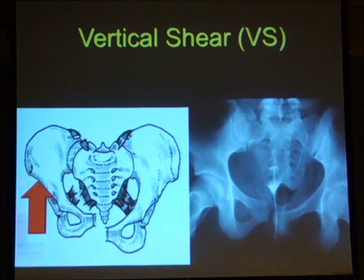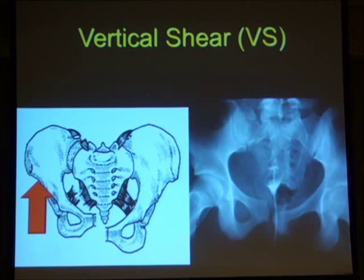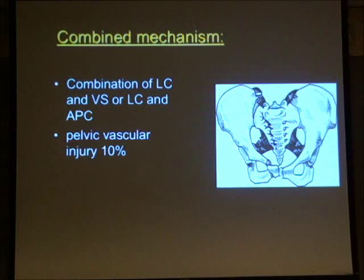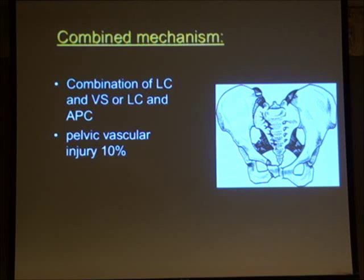Moving on to vertical shear — at the other end of the spectrum in the Young and Burgess classification — one hemipelvis rides up relative to the other, or both hemipelvi can ride up, which is a very serious injury. Then in the Young and Burgess combined mechanism category, a combination of injury forces causes a combination of bony pelvic injuries. It's important to realize there is a 10% mortality risk with these.